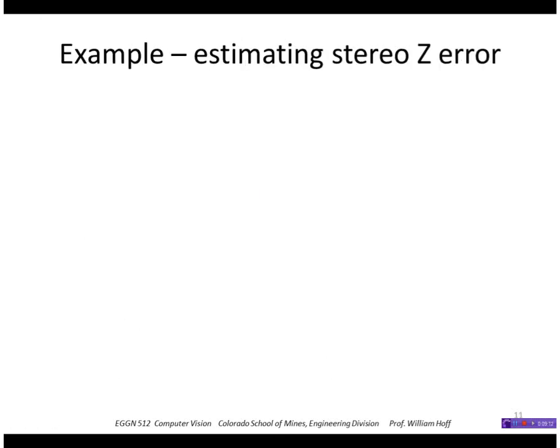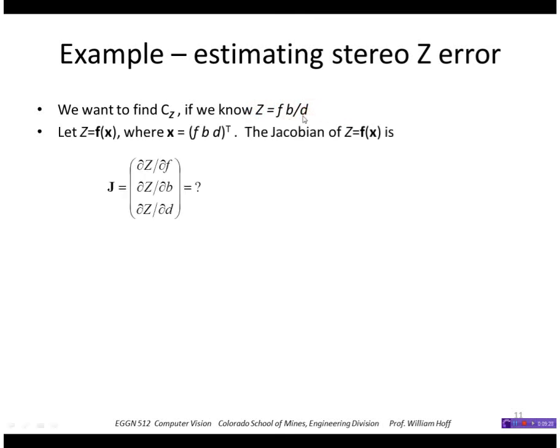Let's take an example estimating the stereo z error. Recall that for aligned cameras, the z value of a point is the focal length times the baseline distance, divided by the disparity d. So if that's a function f of x, where x is f, b, and d.